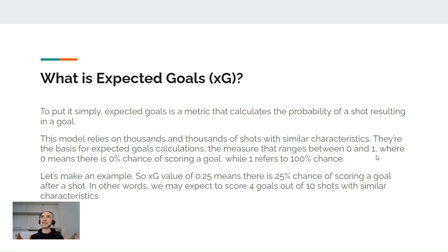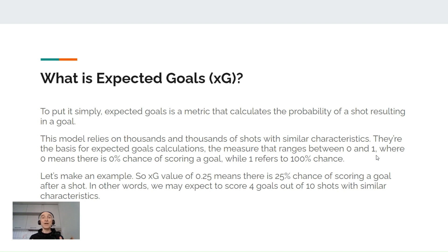What is the expected goals metric? To put it simply, expected goals is a metric that calculates the probability of a shot resulting in a goal. This model relies on thousands and thousands of shots with similar characteristics. They are the basis for expected goals calculations — a measure that ranges between zero and one, where zero means there is literally zero chance of scoring a goal, while one means there is a 100% chance of scoring a goal.